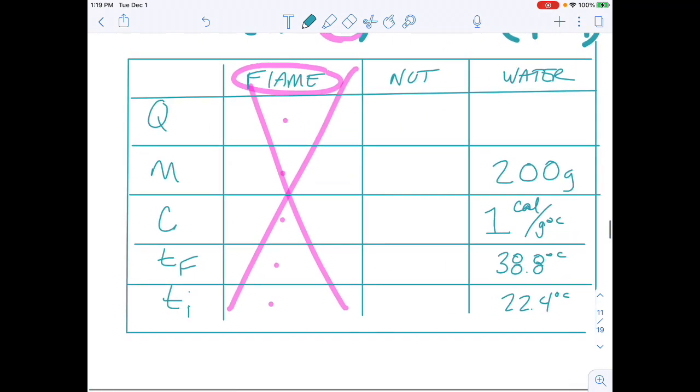If you missed that, you can go back and watch. Now, we could at this point solve for Q of water. That doesn't do us a whole lot of good. That's not what we're looking for. So what we're going to do is we're going to see what information we have on the metal, on that hex nut that was there.